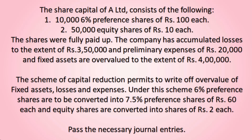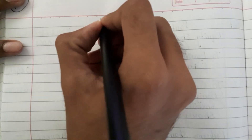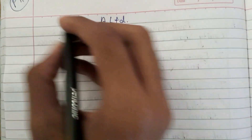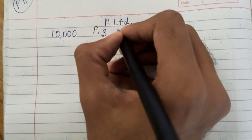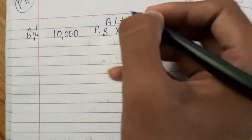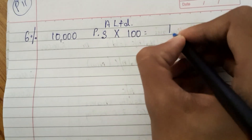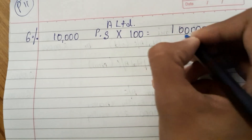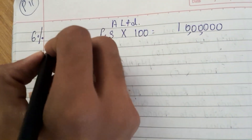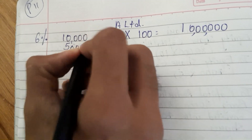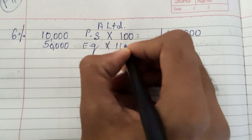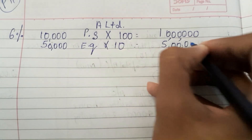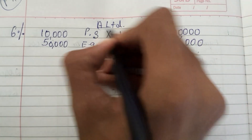So let's see what they have given. There is a company called A Limited. It has 10,000 preference shares at 6% rate of dividend, 10,000 into 100 each, which is nothing but rupees 10,00,000. Then it has 50,000 equity shares of rupees 10 each, which is nothing but rupees 5,00,000. This was the share capital of A Limited company.